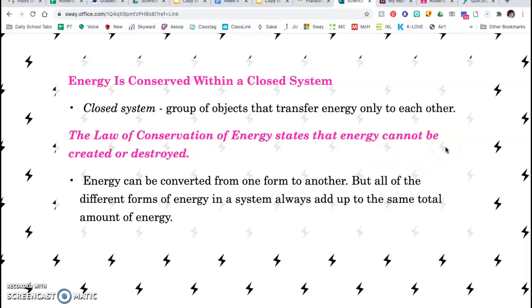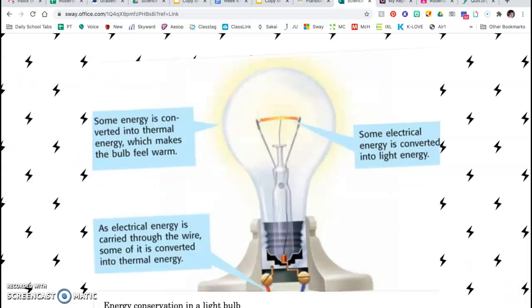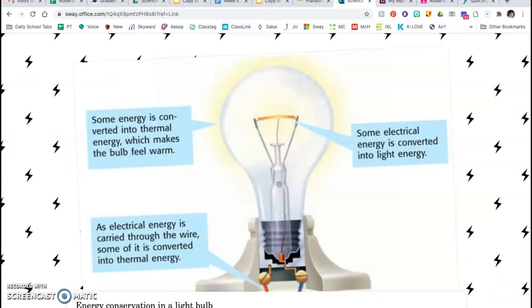For example, we have the light bulb, and we know that we have energy conversions taking place in this light bulb. Some of the electrical energy is carried through the wire. Some of it is converted into thermal energy - that's what makes the bulb feel warm when you touch it.